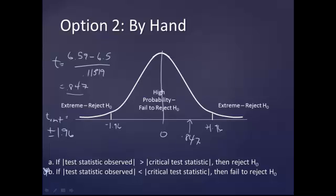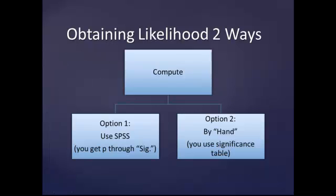And this is consistent with what we saw in SPSS. Now, you don't need to do this both ways. Remember, there are two ways. One is to use SPSS, in which case you get the p through the significance. And the other is to do it by calculating the t and using the t-table to find a critical value.